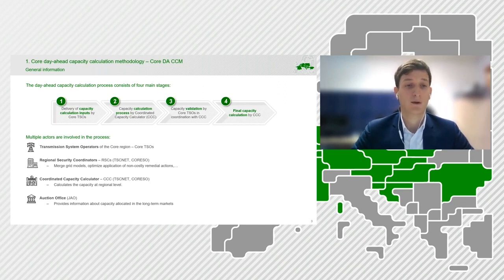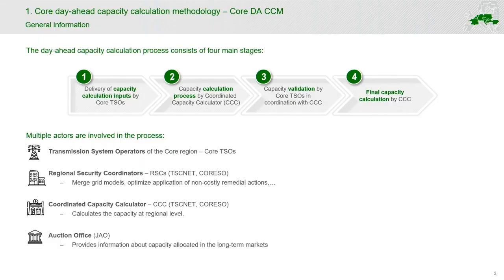Last but not least, there is also the auction office involved in the process. The JAO provides the information about the capacities that were sold and allocated in the long-term auctions, and is also responsible for the publication of the results.